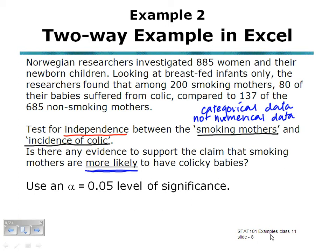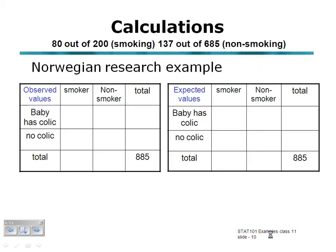We're using an alpha value of 0.05 to make this test. What we're going to do first is consider those figures and put them into a two-way table. We had 80 mothers who smoked who had colicky babies, out of 200 mothers who smoked — so the total in the smoking column is 200, and 80 had babies with colic. Similarly, for the non-smoking mothers, there were 685 mothers who did not smoke, and 137 of them had babies with colic. So we can put that information into a two-way table.